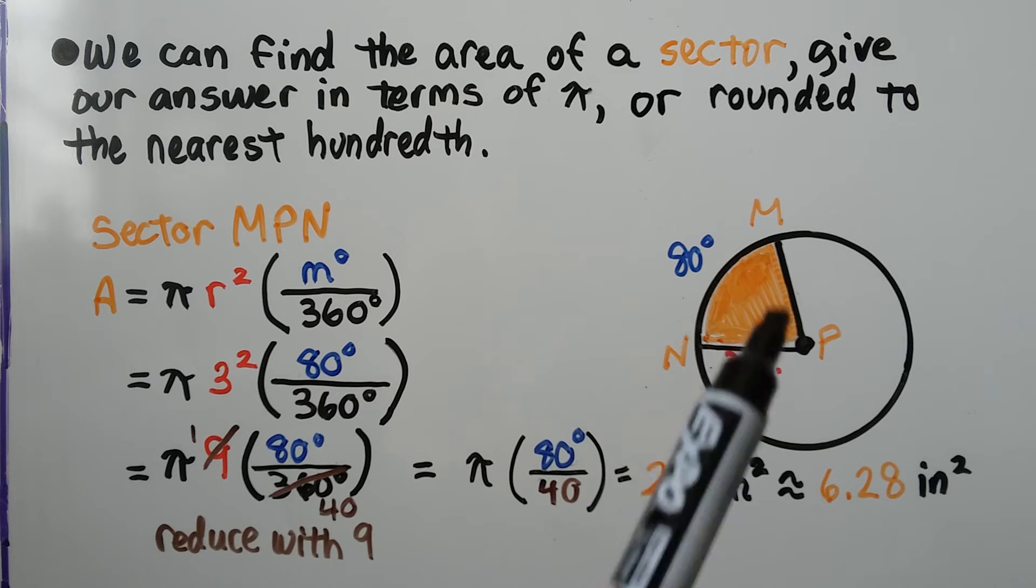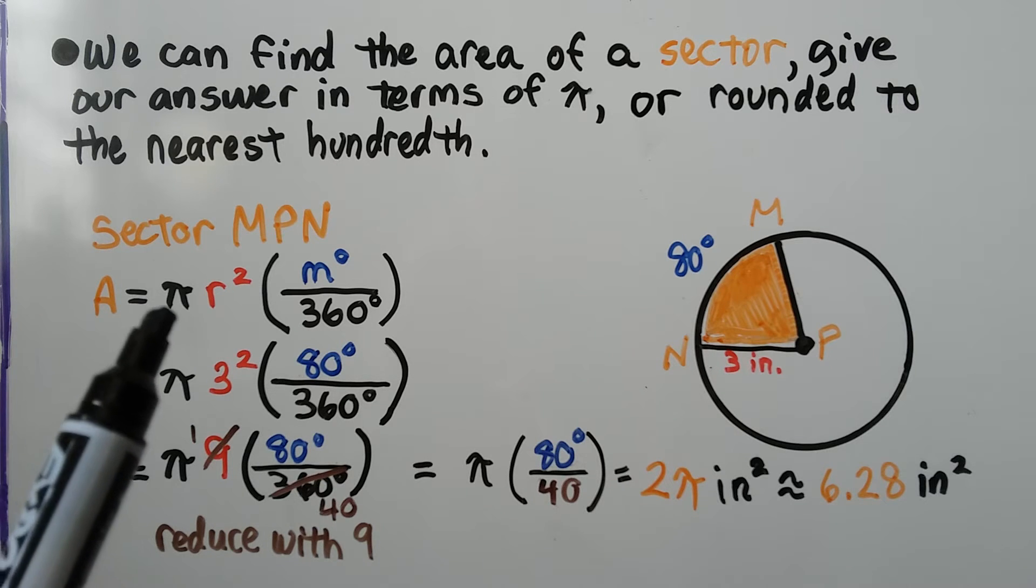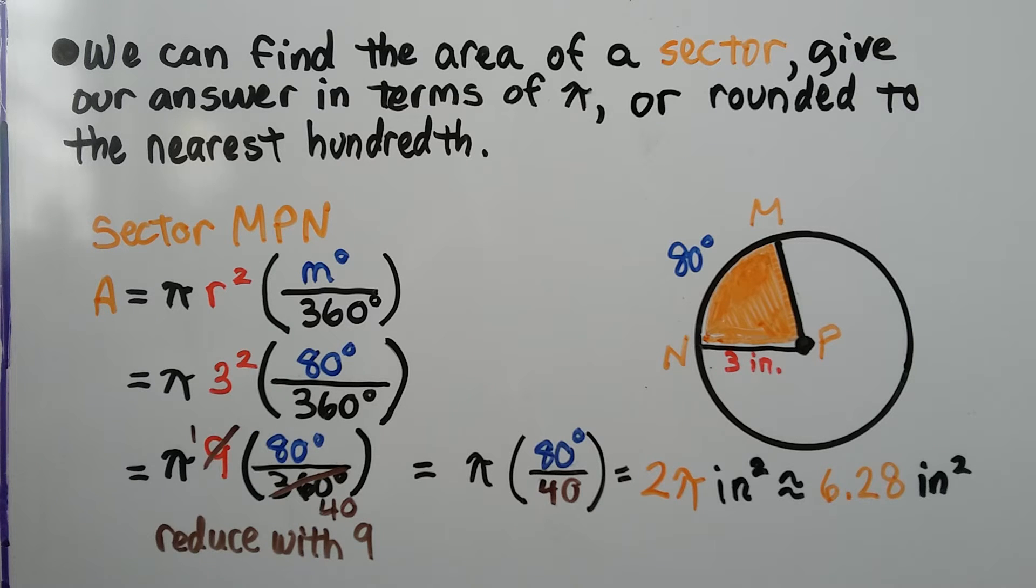This orange area, using the formula that the area is equal to pi r squared times the quotient of that central angle and 360 degrees, we put in our values, we substitute in our values.